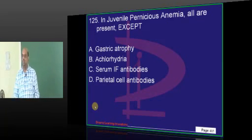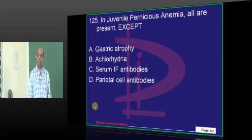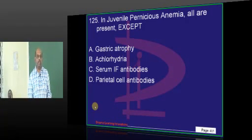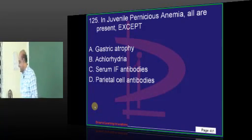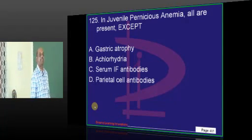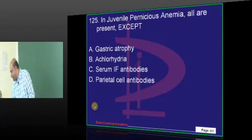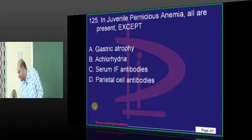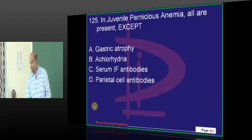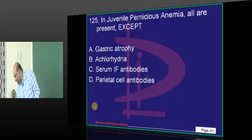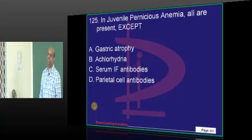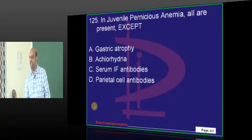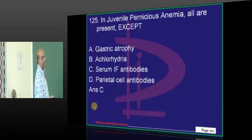Pernicious anemia. Juvenile pernicious anemia is just the full name for pernicious anemia. What is your answer for question 125? We are getting an answer from Swathi: IF antibodies. However, the antibodies are against the parietal cell, not against the intrinsic factor — which is in fact the actual fact.